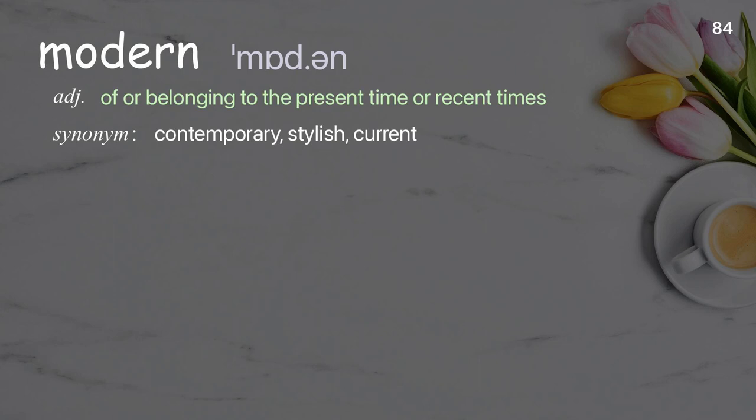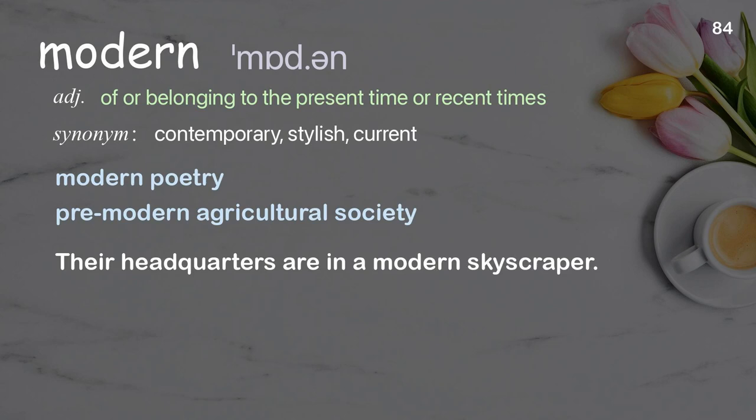Modern: Of or belonging to the present time or recent times. Examples: modern poetry, premodern agricultural society. Their headquarters are in a modern skyscraper.